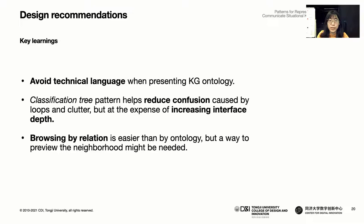The classification tree pattern can help ease this problem, but at the expense of increasing interface depth. Browsing a KG using the entity and relevant information pattern is easier than browsing by ontology, but a preview of the neighborhood might be needed to support this interaction.